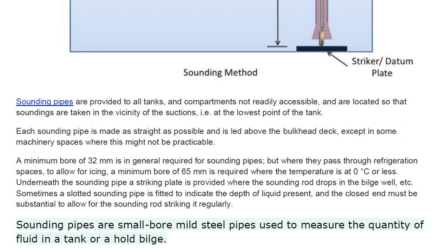Underneath the sounding pipe, a striking plate is provided where the sounding rod drops in the bilge well. Sometimes a slotted sounding pipe is fitted to indicate the depth of liquid present, and the closed end must be substantial to allow the sounding rod striking it regularly.